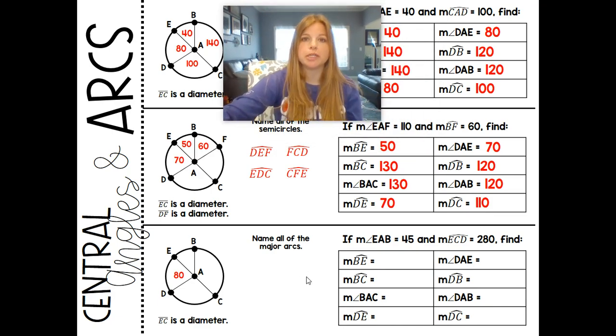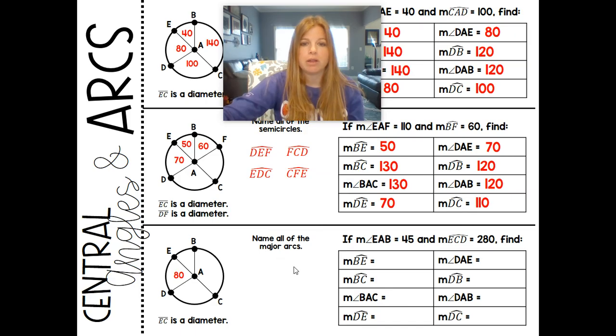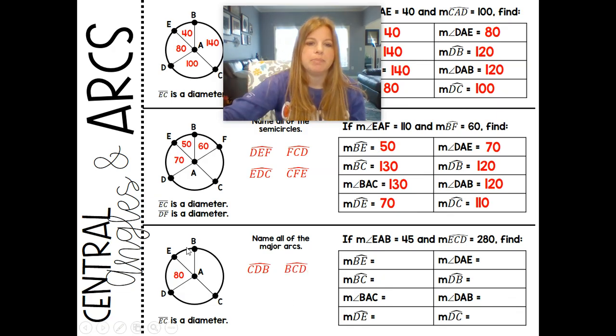Last one, name all of the major arcs. So major arcs are arcs that are greater than 180. So they go past a semicircle. Minor is less than 180. Semicircle would be exactly halfway through, and a major is larger than it. So name all of the major arcs. CBD is definitely a major arc. Now notice it says EC is a diameter. So I want something for a fact that goes past that diameter. BCD is definitely also. BCE is very big. It's only missing this one little arc here. If I go B, C, E.